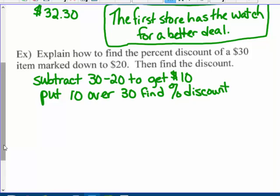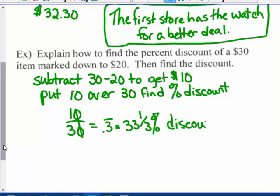Then find the discount: $10 over $30. That's one-third, which is 33 and one-third percent discount. You're saving a third of the item. That's it for today. We're going to do sales tax and discount in class tomorrow.